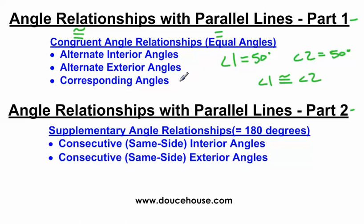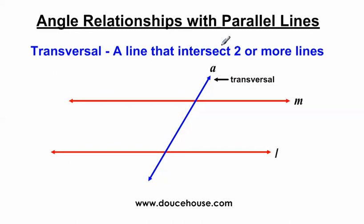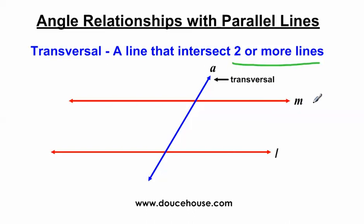You can't have more than just two - just for right now we're talking about two different angles that are congruent to each other. Before I can jump into those angle relationships, I need to talk about the word transversal. This word transversal is in all my definitions, so you need to make sure you understand what it means. It's a line that intersects two or more lines. So line A is a transversal because it's crossing line M and line L, but M is not a transversal because it's only crossing line A.